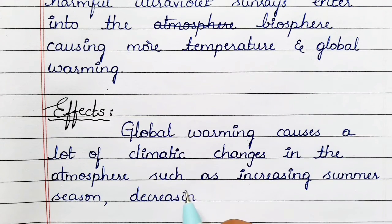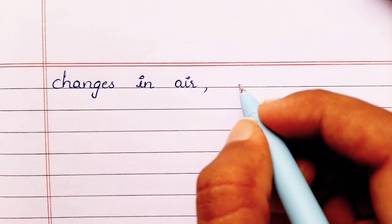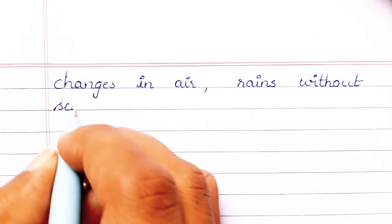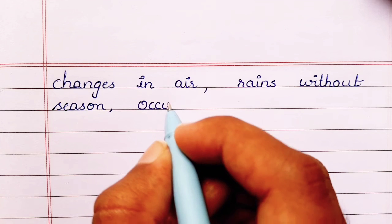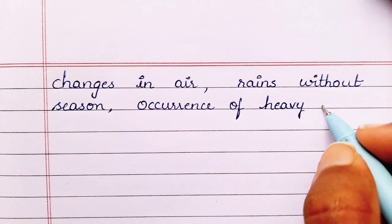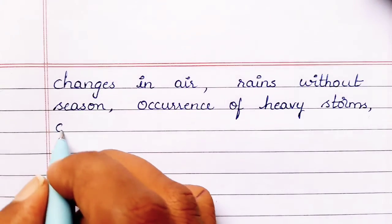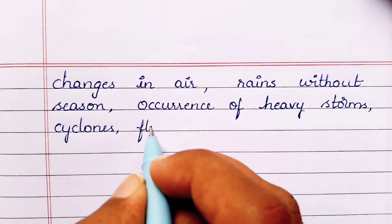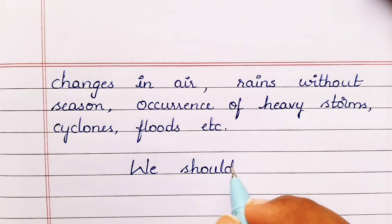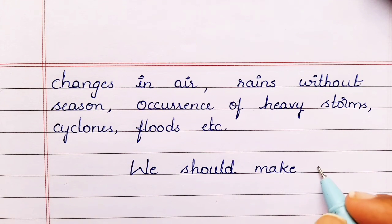Global warming causes a lot of climatic changes in the atmosphere. It causes many changes such as increasing summer season, decreasing winter season, changes in air, rains out of season, occurrence of heavy storms, cyclones, floods, etc.